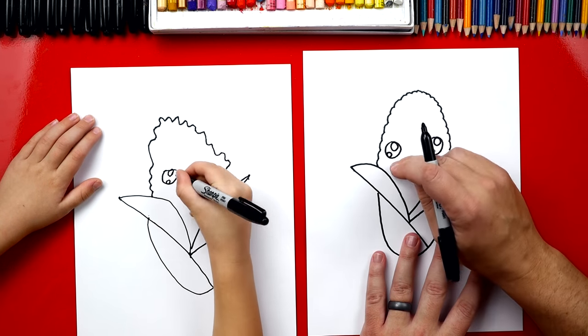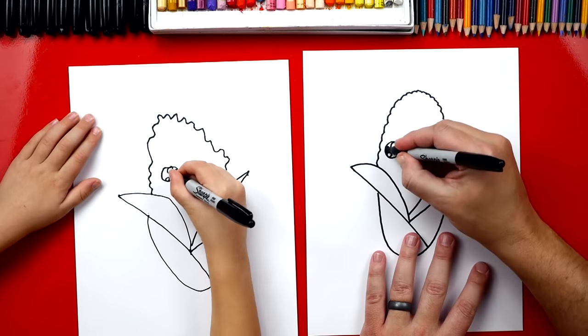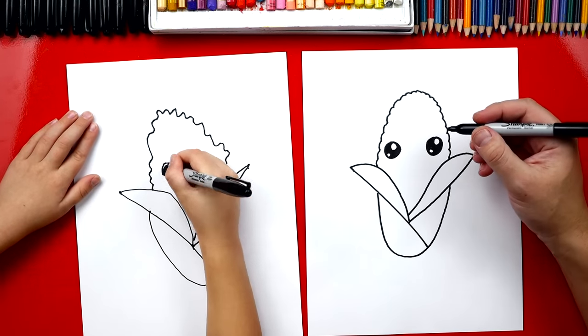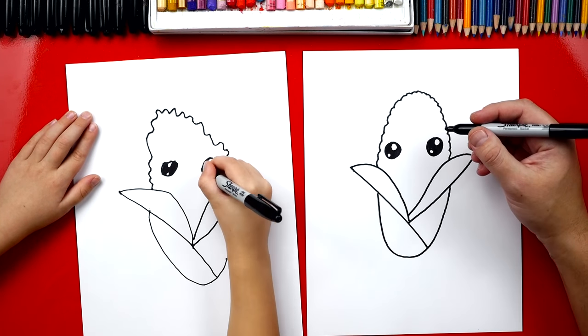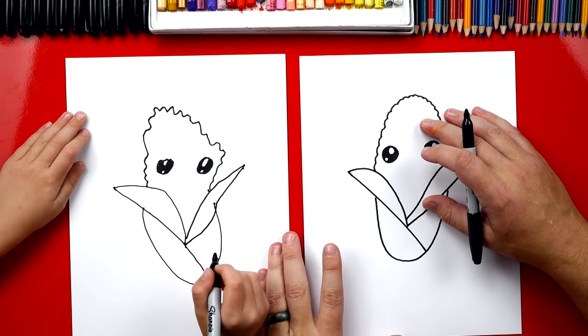Good. Now let's color in the big circle, but leave the two little ones white. You did it. You finished coloring the eyes. It looks awesome.